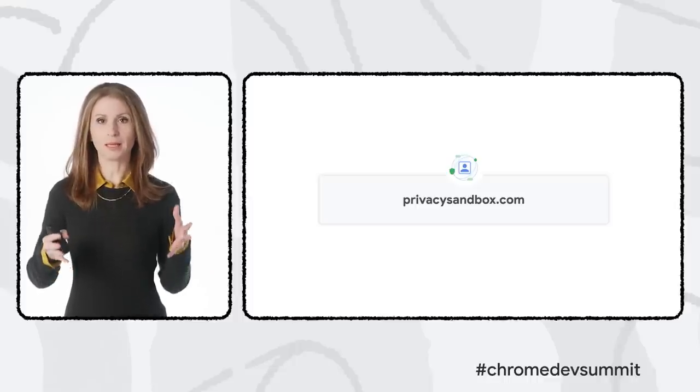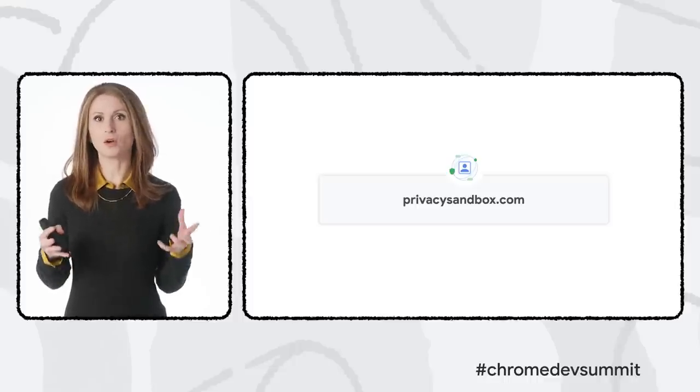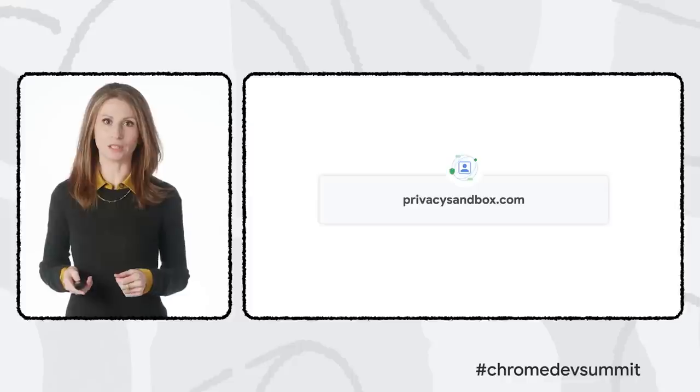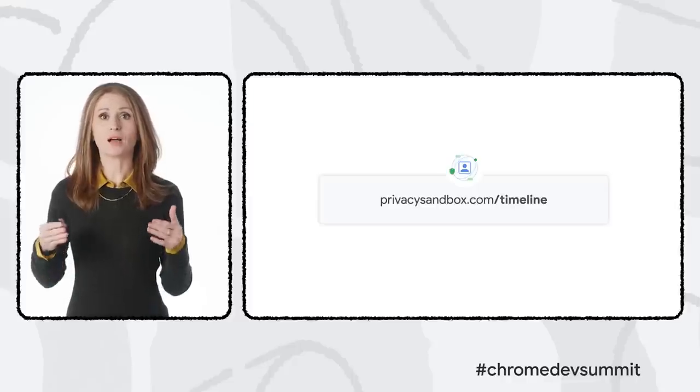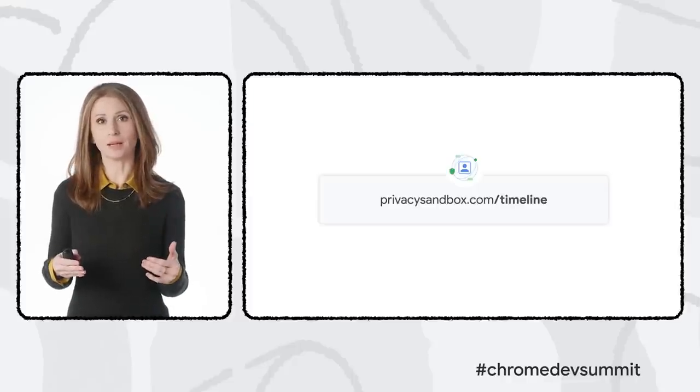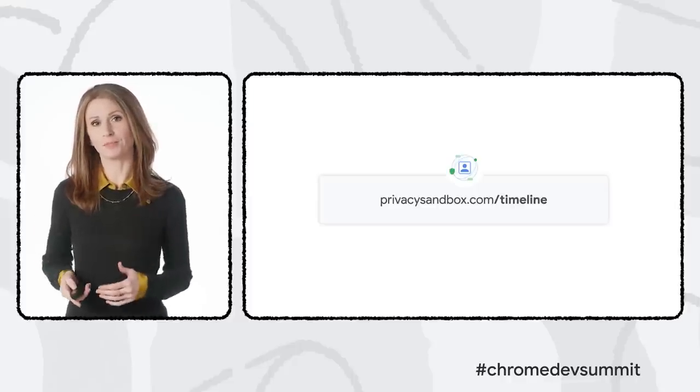PrivacySandbox.com explains the vision, goals, and concepts behind this initiative, and includes a high-level timeline updated every month. User Agent Client Hints, or UACH, launched in Chrome earlier this year and is now ready to scale. It's part of the Privacy Sandbox work stream to reduce covert tracking such as browser fingerprinting.